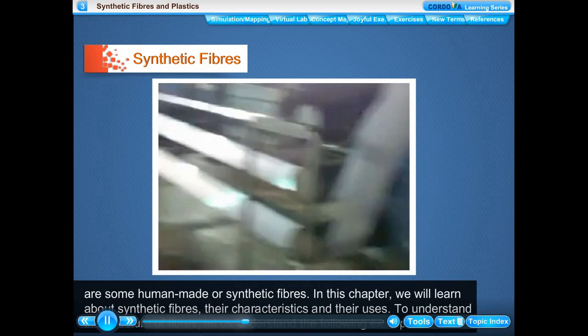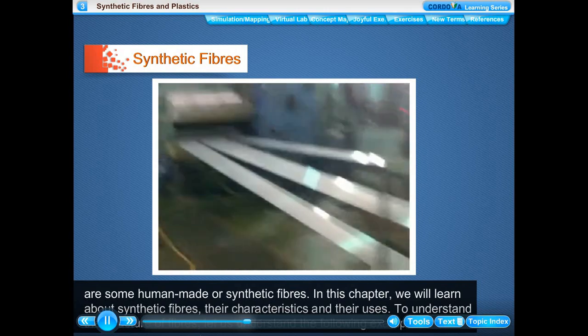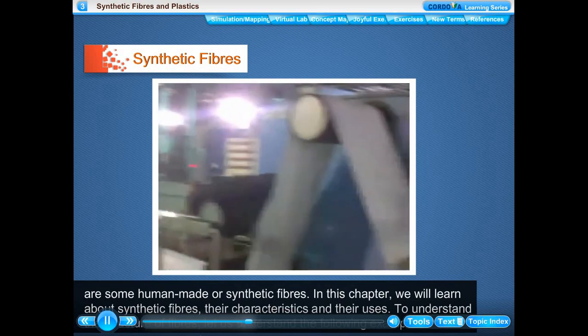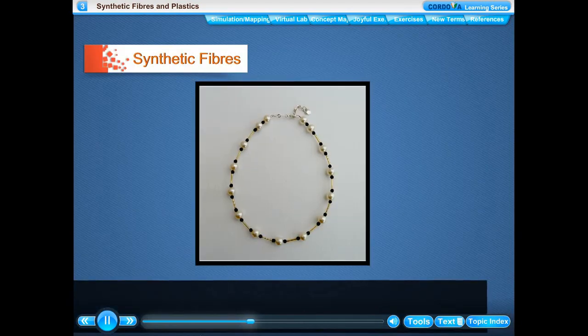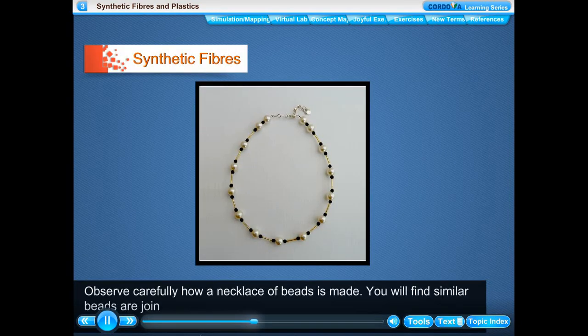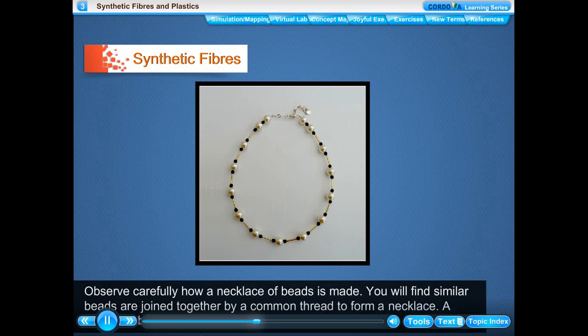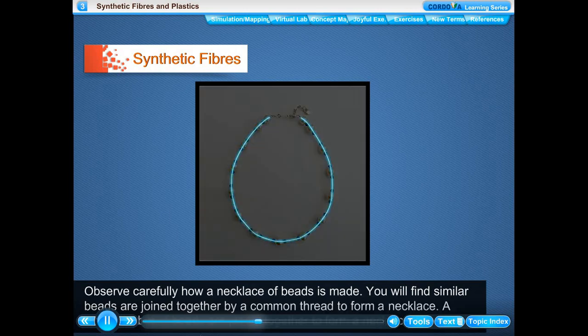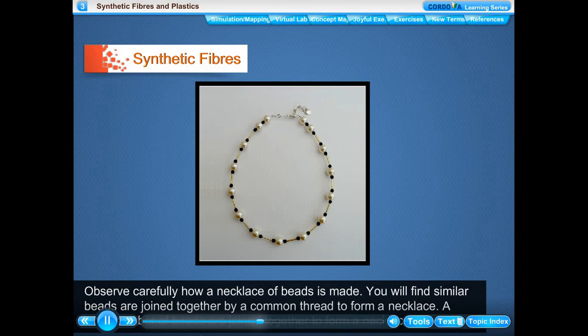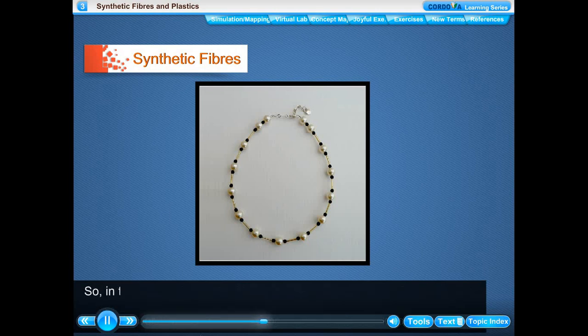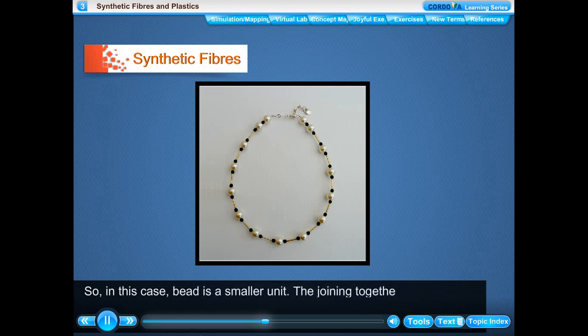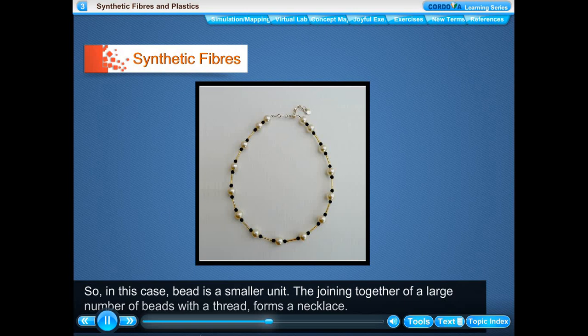To understand the structure of fibers, let us consider the following examples. Observe carefully how a necklace of beads is made. You will find similar beads are joined together by a common thread to form a necklace. In this case, the bead is a smaller unit. The joining together of a large number of beads with a thread forms a necklace.